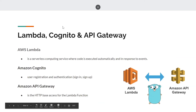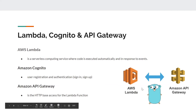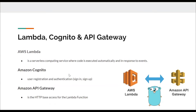Three more technologies we used were Lambda, Cognito, and API Gateway. Lambda is an event-driven serverless computing platform provided by Amazon. It is a computing service that runs code in response to events and automatically manages the computing resources required by that code. Cognito is the API Amazon uses to create accounts and usernames, allowing users to register and authenticate their accounts. Amazon API Gateway is the way Amazon allows users to access the Lambda function.